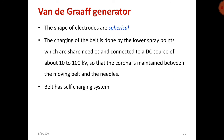The shape of the electrodes is spherical. The charging of the belt is done by the lower spray points, which are sharp needles connected to a DC source of about 10 to 100 kV, so that corona is maintained between the moving belt and the needles. The belt has a self-charging system. This is all about the Van de Graaff generator. Thank you.